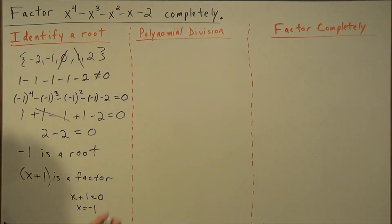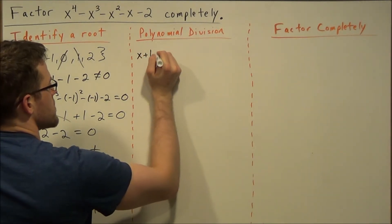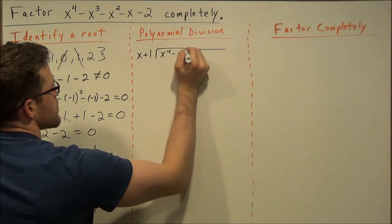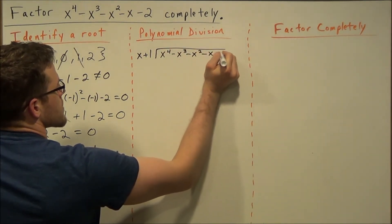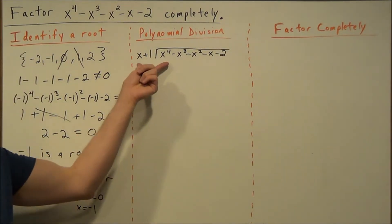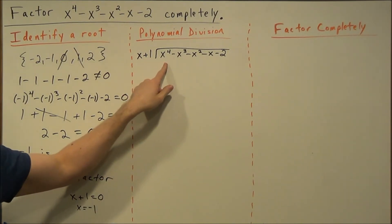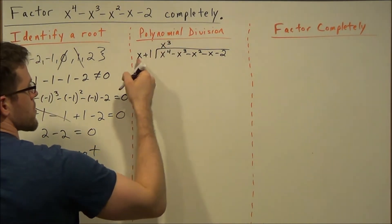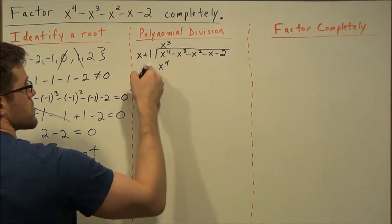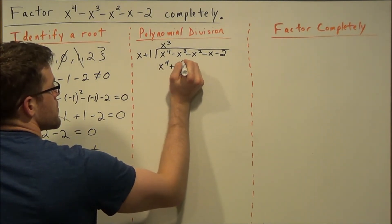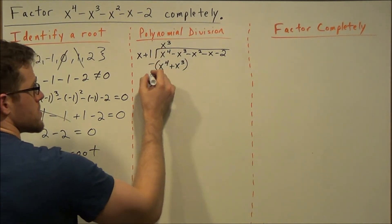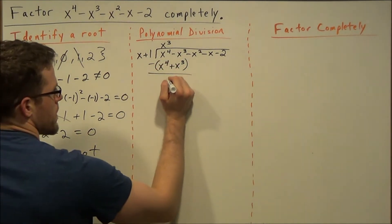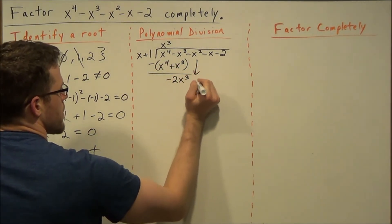So for the next part, we're going to divide by x plus 1. And this is dividing into the entire polynomial x to the fourth minus x to the third minus x squared minus x minus 2. So we look at the leading terms x and x to the fourth. X goes into x to the fourth, x to the third times. Then we distribute. We have x to the third times x is x to the fourth, x to the third times 1 is x to the third. And now we subtract this line from the previous. x to the fourth minus x to the fourth cancels, and then negative x to the third minus x to the third is negative 2x to the third. Carry down the next term.